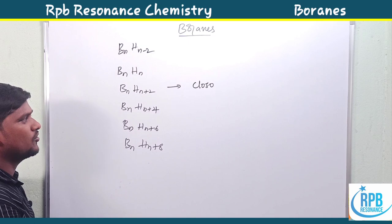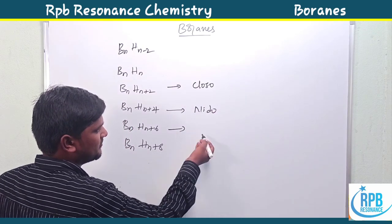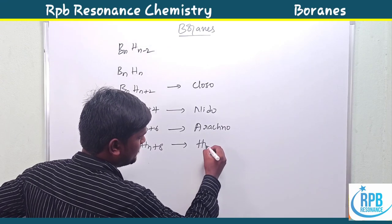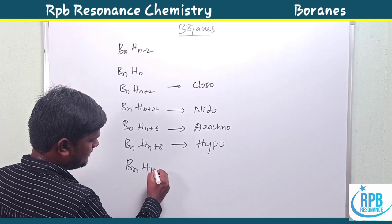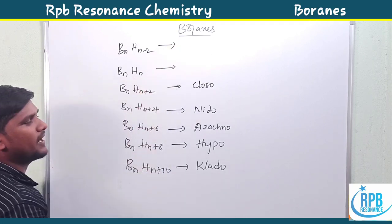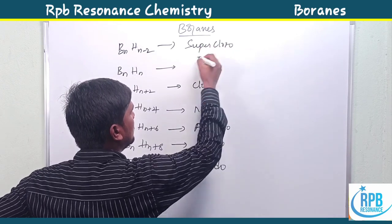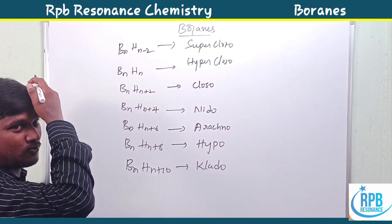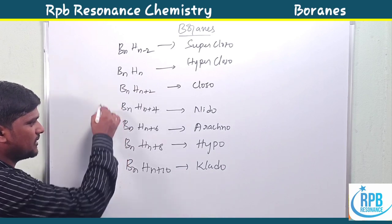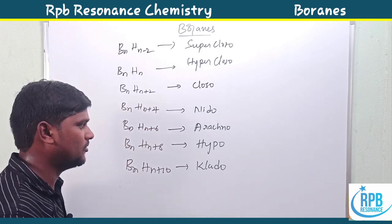BnHn+2 is closo. If four more hydrogens are present (BnHn+4), it is nido. Six more hydrogens (BnHn+6) gives arachno. Eight more gives hypo, and ten more (BnHn+10) gives clado. The hyper-closo and super-closo structures are not observed in boranes; they are observed in organometallic clusters.